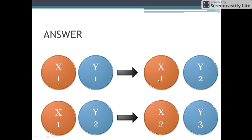Now we have one x type of star and two y type of stars that collide in the next step. When these stars collide, they form one plus two, that is three new y type of stars. These two y type of stars are transformed into two x type of stars, and the one x type of star present before the collision gets eliminated.